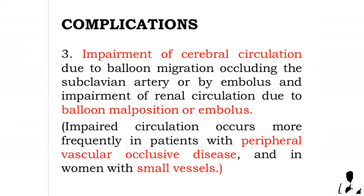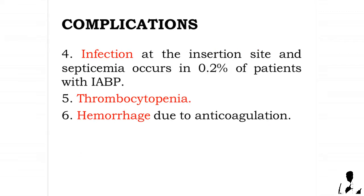Three, impairment of cerebral circulation due to balloon migration occluding the subclavian artery or by embolus, and impairment of renal circulation due to balloon malposition or embolus — these occur more frequently in patients with peripheral vascular occlusive disease and in women with small vessels. Four, infection at the insertion site and septicemia, occurring in 0.2% of patients. Five, thrombocytopenia. Six, hemorrhage due to anticoagulation.